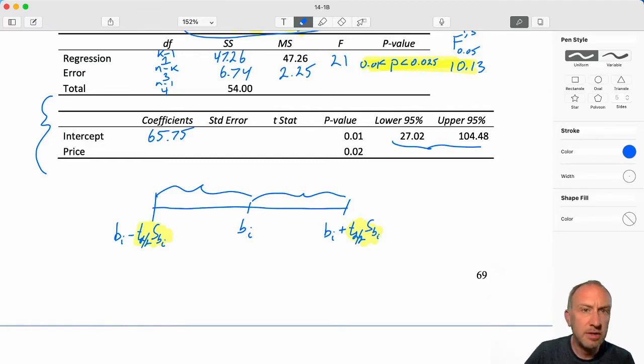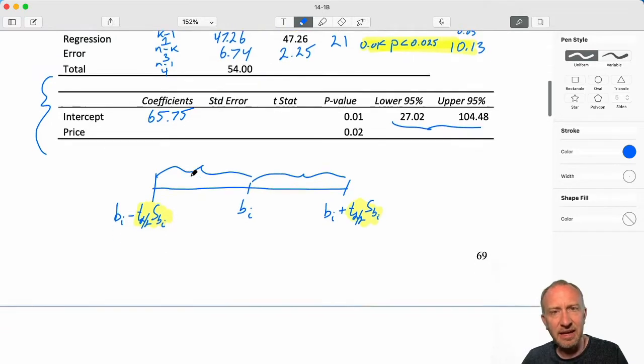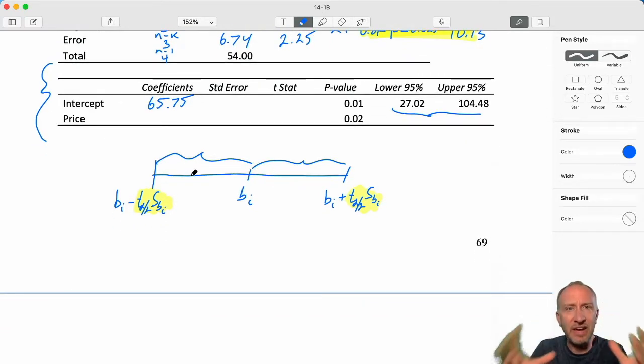Which means that that coefficient is exactly in the middle of that confidence interval. So if I figure out the middle of that confidence interval, 104.48 plus 27.02, divide that by 2, that gives me my coefficient 65.75. So that was a different approach to getting that result, to obtaining that coefficient, just because I started with different information.